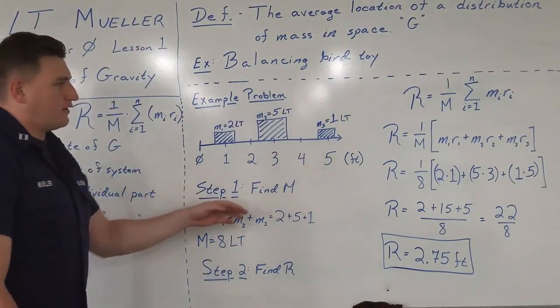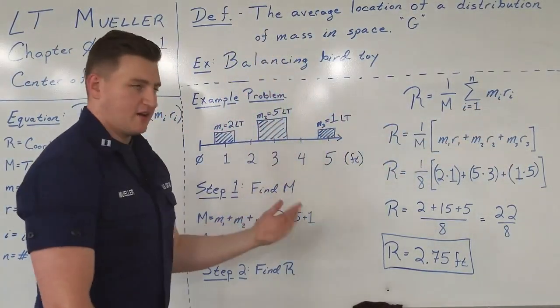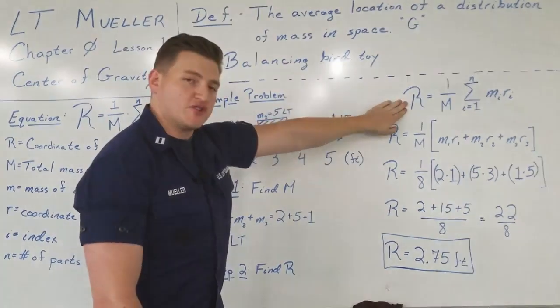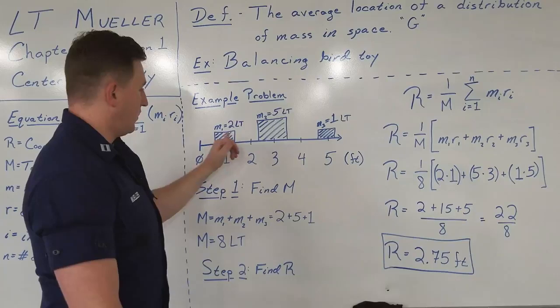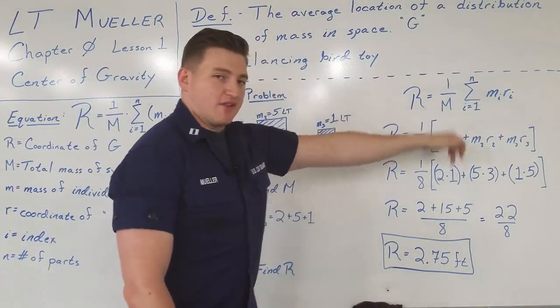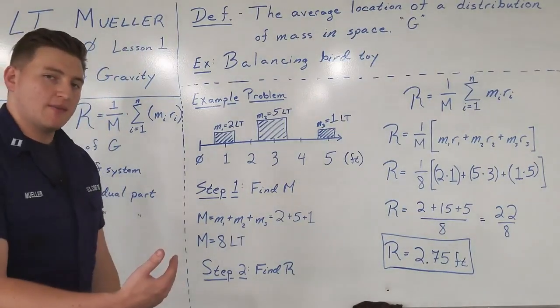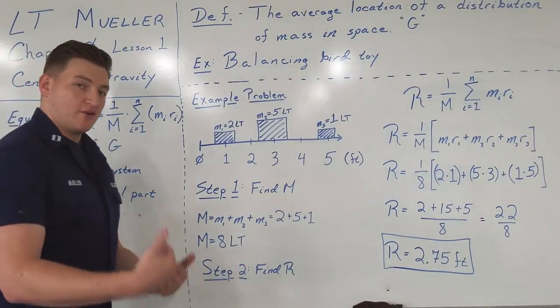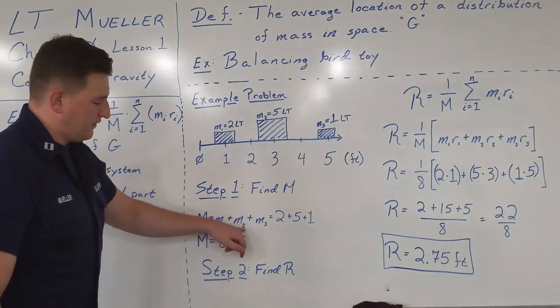So our step one, if we look at our equation, we know what our Mi's and Ri's are, each piece is defined. We don't know what R is, that's what we're trying to solve. We know what n is, n is just the total number of pieces, one, two, three, so n equals three. So we have to find M, this capital M, total mass of the system. In order to find M, all we have to do is sum up the individual masses to get the total system mass. So you have capital M equals M1 plus M2 plus M3.